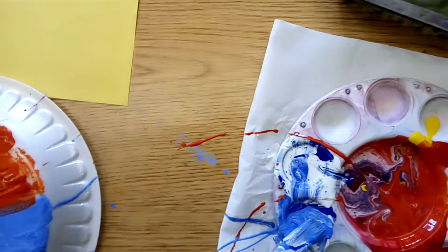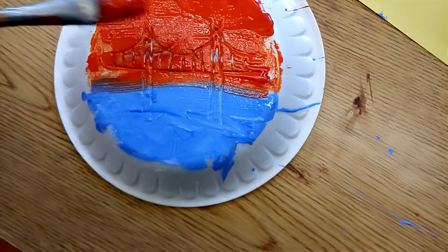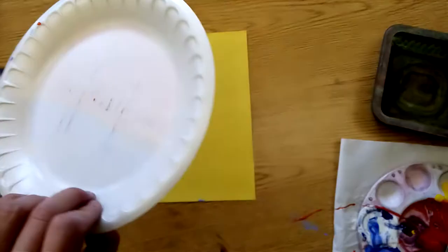Alright. Let's see what it looks like on yellow. Yellow paper. My one print. I'm going to try and center it pretty well. Put it down. There we go.